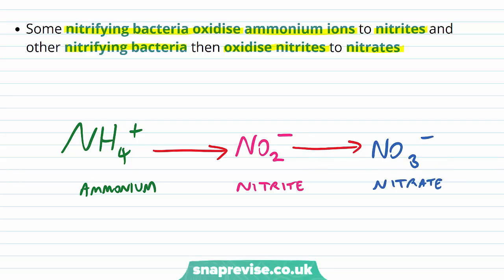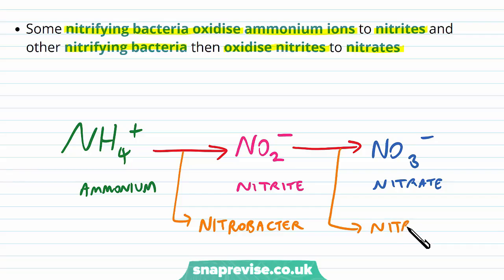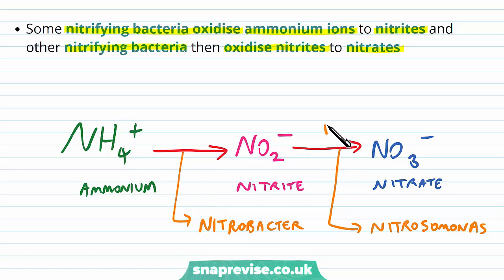Some bacteria do the first step — an example would be Nitrobacter. Whereas some bacteria do the second step, and an example here would be Nitrosomonas. So different bacteria do different stages, but either way they get energy from the oxidation of one compound to another.